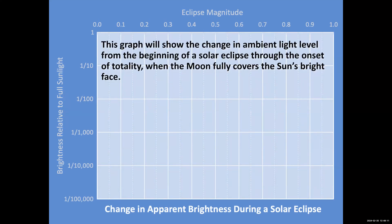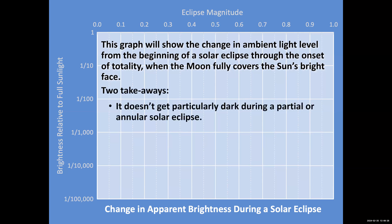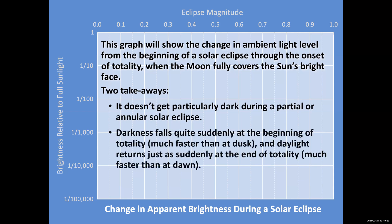Here we have a graph showing how the light level is going to change over the course of a solar eclipse from the onset, first contact, to totality, when the moon completely covers the sun. There are two takeaways. One is it does not get particularly dark during a partial eclipse. And the other is that the darkness falls quite suddenly right at the end of partial as we plunge into the total eclipse.